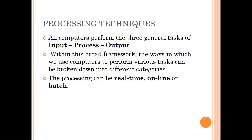We'll now move on to talk about processing methods. All computers perform three general tasks: input, they process data, then they produce output. Within this broad framework, the ways in which computers perform various tasks can be broken down into different categories. The processing can be real-time, it can be online, or it can be batch.